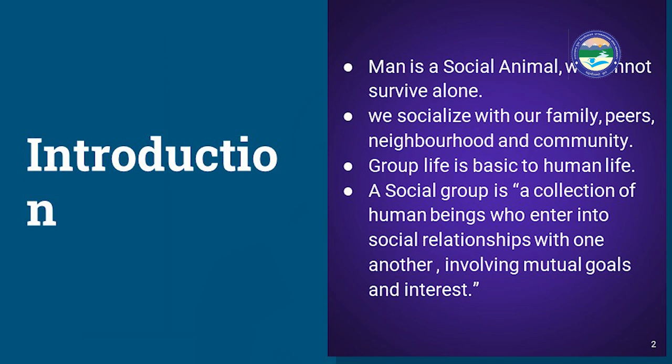A social group is a collection of human beings who enter into a social relationship with one another. As we enter into a social relationship, we involve certain mutual goals and mutual interest, and there is a lot of give and take in the relationship. We can understand the group to be a collection of individuals who are psychologically interacting with each other, who have common goals, and they have certain group norms. Through this, we understand what a social group actually is.